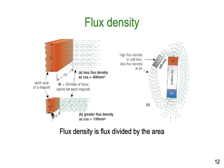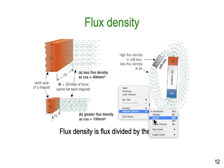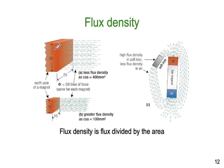Flux density is the next concept. We have all these lines of magnetic force — flux density is how spread out or how dense those lines of force are. Here we have an object that's 20 millimetres by 20 millimetres and you can see the lines of magnetic force are reasonably well spread out — this is the north pole of a magnet.